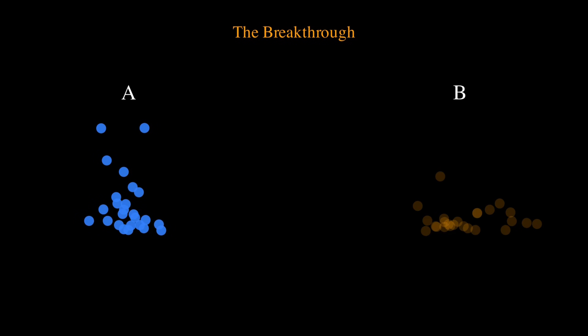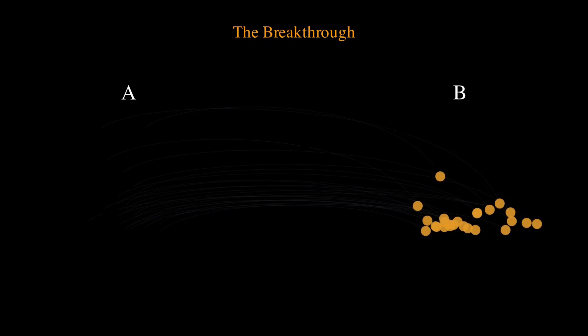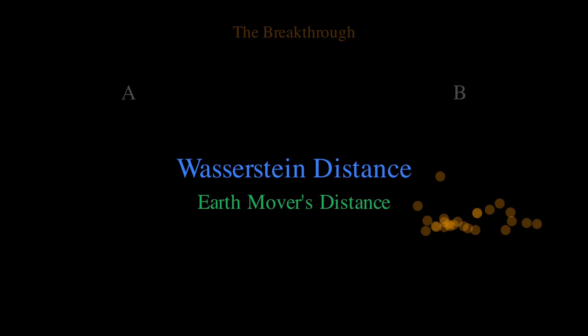Here's the breakthrough. Measure distance by the work needed to transform one distribution into another. Treat each distribution as a pile of dirt. Find the cheapest way to shovel dirt from pile A to pile B. The total work required is the Wasserstein distance, also called the earthmover's distance.